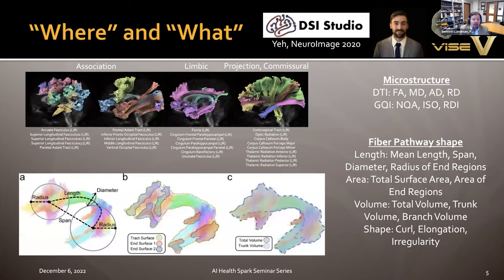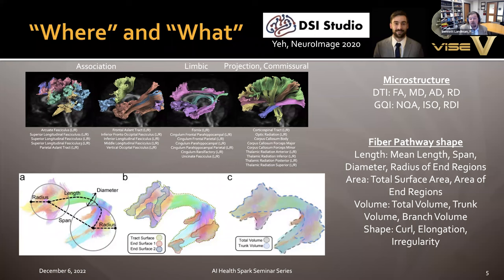Diffusion tensor imaging gives us an idea to go after these. Multi-compartmental modeling allows us to model greater types of connections including crossing fibers. When we make a map of these areas, we see association fibers, limbic projections, and commissural projections — each with a different structural phenotype. We can characterize how large endpoints are, how many gyri they connect, how far they move in Euclidean or geometric sense.